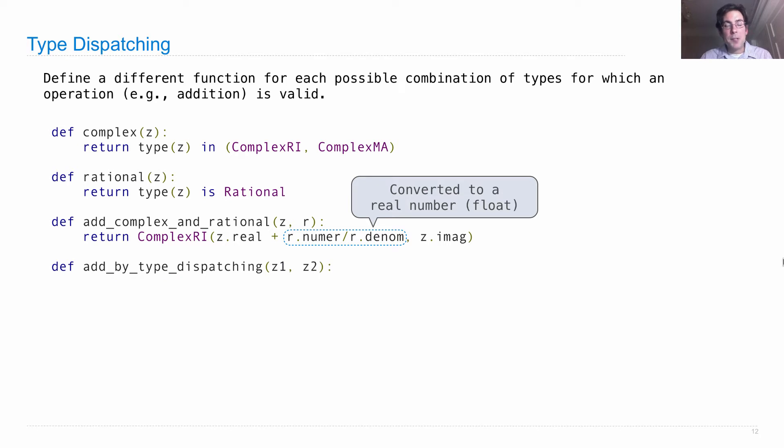And then, we can define a function that adds two numbers, which could either be complex numbers or rational numbers. So type dispatching means look at the type of the arguments and do different things depending on their type.